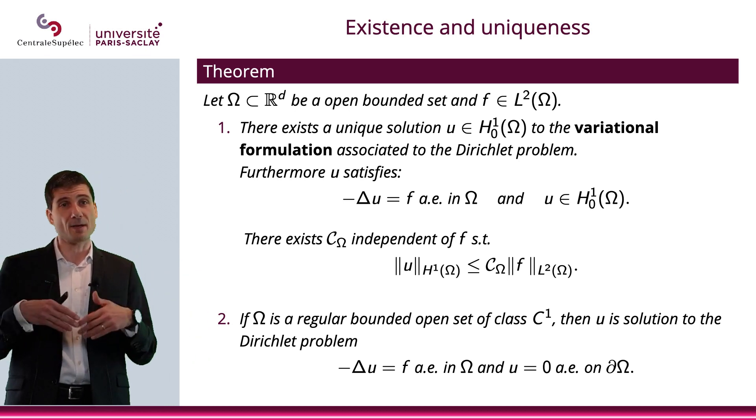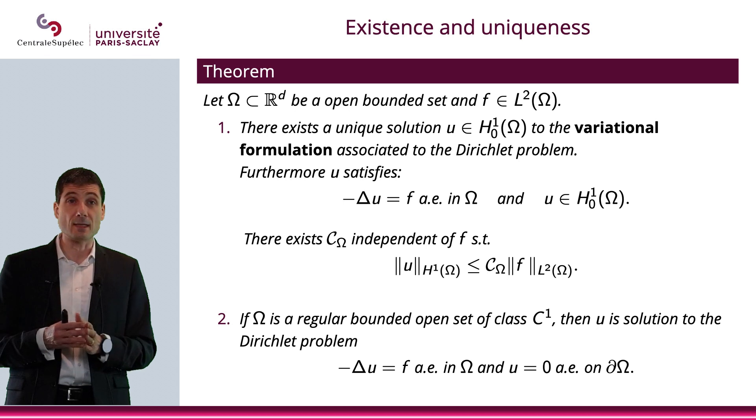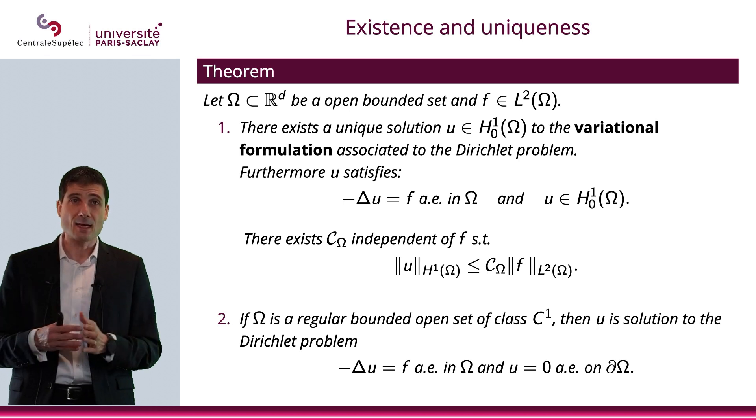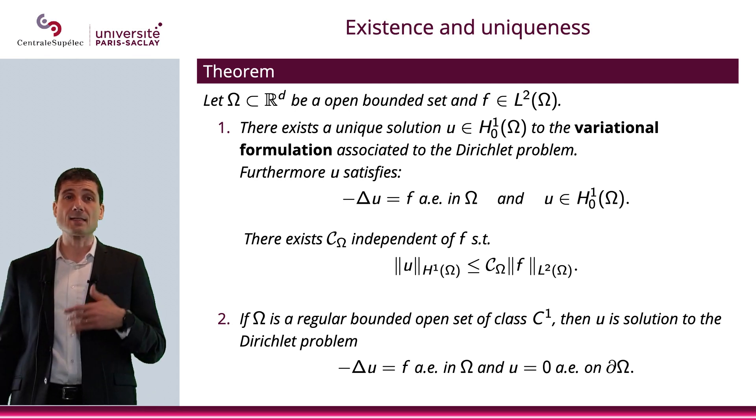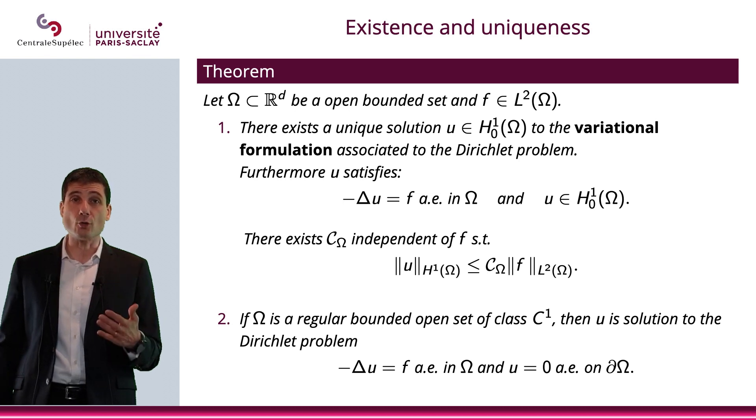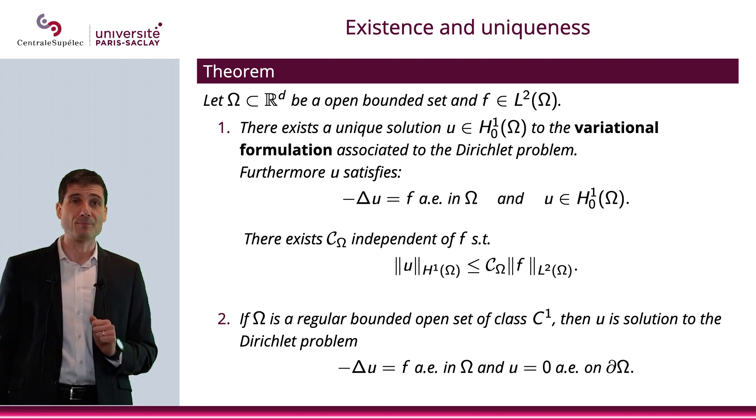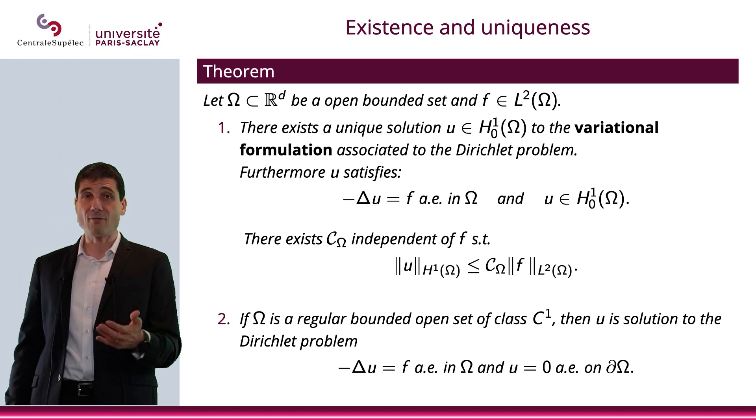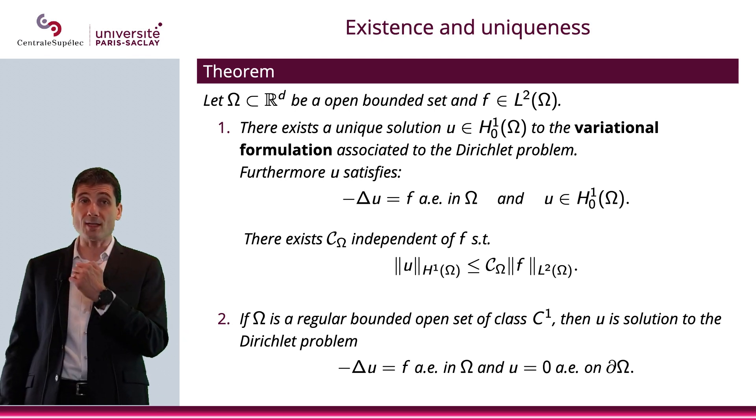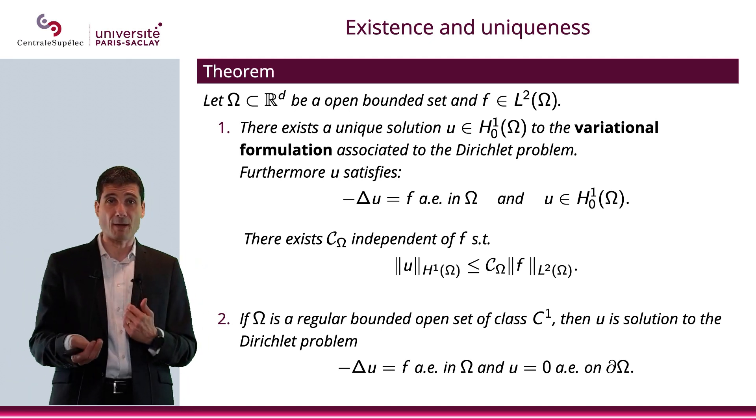I mentioned d with d equal to 2 is what we're going to do in this video. Omega will be an open bounded set in R^d that will be smooth enough. f is in L^2. Then there will be a unique solution u in H^1_0 to the variational formulation associated to the Dirichlet problem.